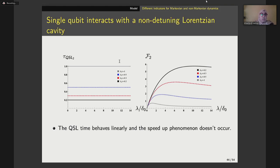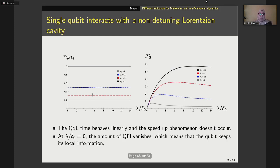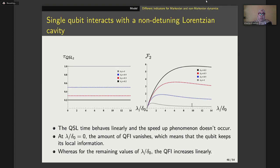This is not the case for the second model, namely a single qubit interacting with a non-Lorentzian cavity. Similarly, we plotted quantum speed limit time and quantum Fisher information, this time against the coupling parameter. It is clear that the quantum speed limit time behaves linearly and the speedup phenomenon doesn't occur, which means that only the open quantum system gives information to its environment and there is no feedback of information from the environment to the system. This can also be seen from the behavior of quantum Fisher information, where the amount completely vanishes at a certain point, meaning the open system keeps its local information, and for remaining values it increases linearly.